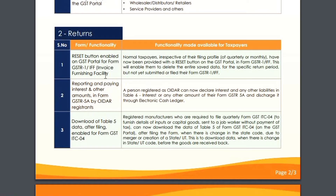The second important update regarding returns says that reporting and paying of interest and other amounts in the form of GSTR-5A by OIDAR registrants — persons registered as OIDARs — can now declare their interest and other liabilities in table number six of GSTR-5A. This will be discharged into their electronic cash ledger.